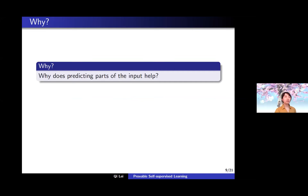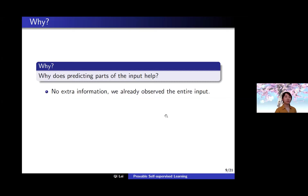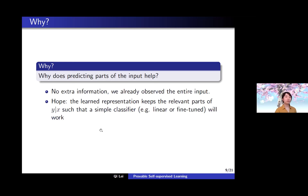Now that we know self-supervised learning works, we are interested in why it works. Why does predicting parts of the input possibly help us? It's quite mysterious because using this procedure, there is no new information—we already have the entire input. We deliberately occlude some parts and predict them, hoping the learned representation keeps the relevant parts of the label conditioned on input such that a simple linear classifier will work. But how? That is the question we want to answer.